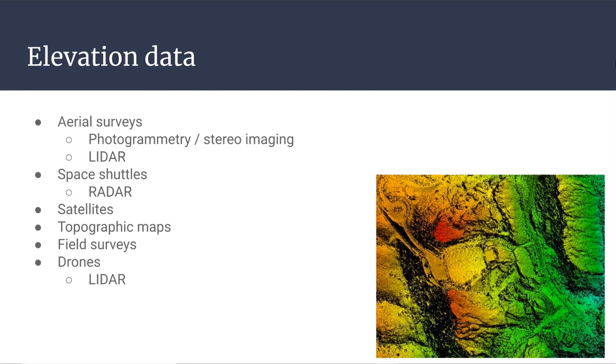So one of the earlier types of getting information about elevation was through the use of stereo images and photogrammetry. This is where you'd have an airplane flying over an area. You take two pictures from a slightly different location and by having those overlapping photos, you're actually able to see elevation. You kind of get a 3D image and that 3D image can be translated to estimates of what the actual elevation is in different places.